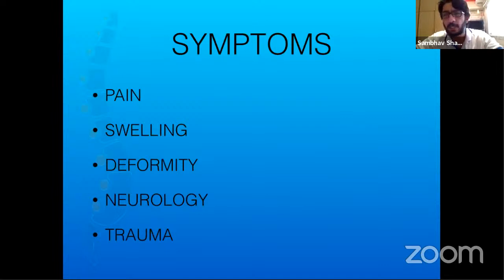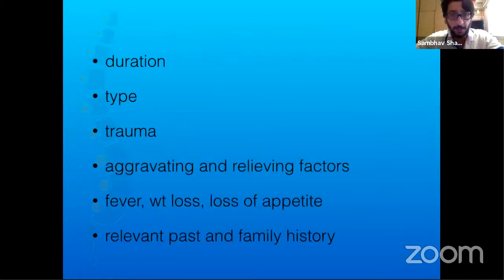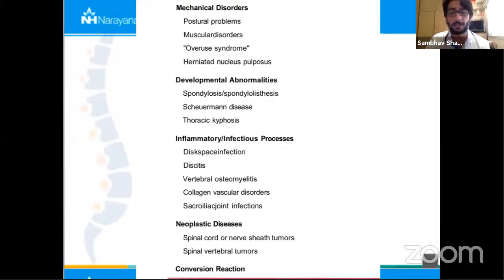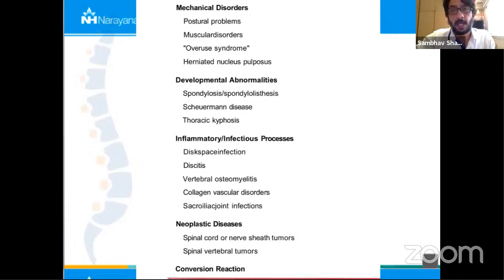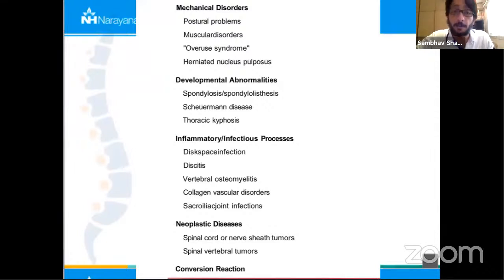Deformity as a symptom can be handled initially in the OPD — I'll explain how later. Significant trauma should be referred straight to a specialist. The major categories of back pain include mechanical disorders, developmental abnormalities, inflammation or infection, metastatic or neoplastic disease, and conversion reaction. Mechanical causes are the majority, especially in kids around twelve to thirteen who spend time on laptops and mobiles — postural problems, overuse syndromes, and prolapsed intervertebral discs.